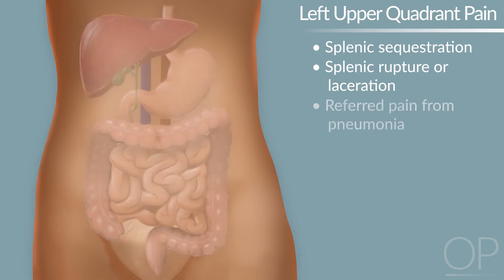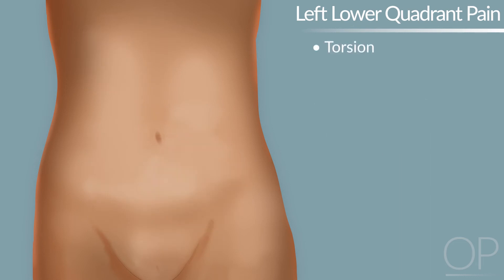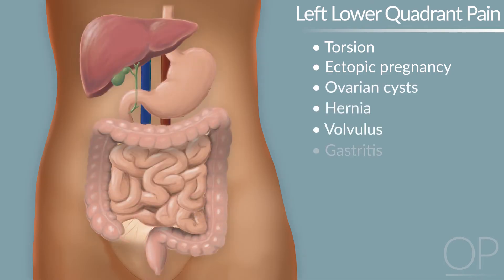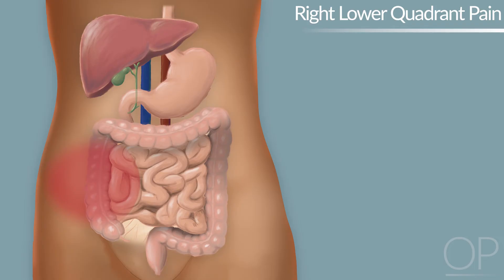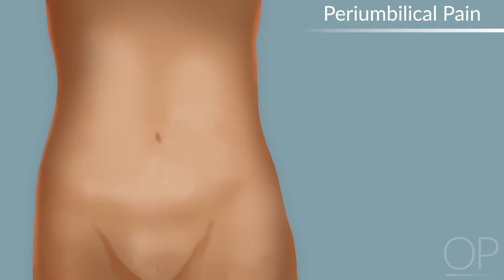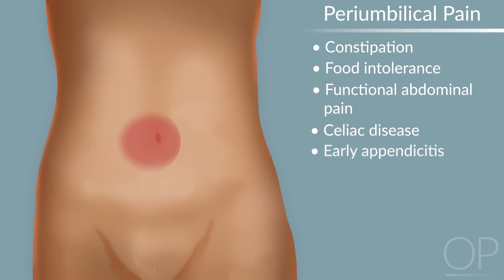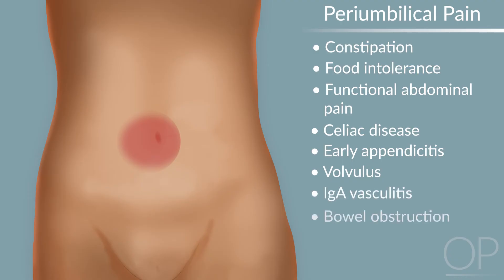Consideration of more common conditions such as referred pain from pneumonia or pyelonephritis is important for upper quadrant pain. The differential diagnosis for left lower quadrant pain includes torsion, ectopic pregnancy, ovarian cysts, hernia, volvulus, gastritis, colitis, and constipation; these conditions also cause right-sided pain. Accurate diagnosis of right lower quadrant pain is challenging given the number of conditions localizing to this region, and rapid assessment for surgical emergencies such as appendicitis must be undertaken. Other serious diseases warranting timely diagnosis include bowel perforation, intussusception, and Crohn's disease. Periumbilical pain without other red flags is common with constipation and is most frequently the underlying cause. Food intolerance such as lactose intolerance, functional abdominal pain, and celiac disease are other common etiologies. In rare cases, it may represent early appendicitis or another serious condition such as volvulus, IgA vasculitis, bowel obstruction, or gastroenteritis.